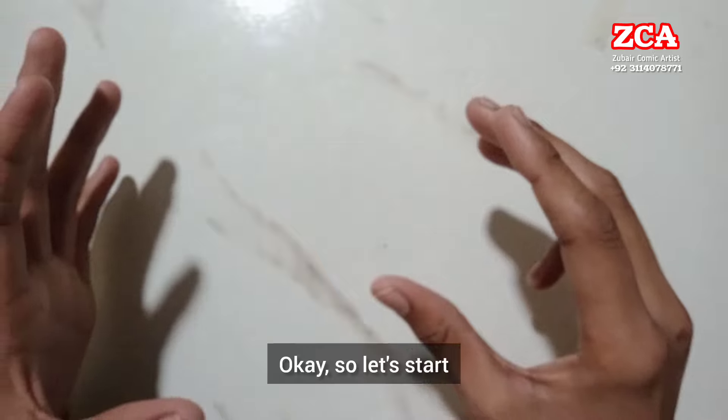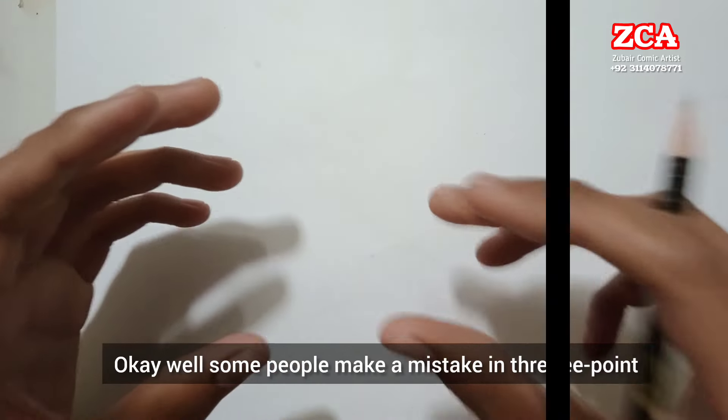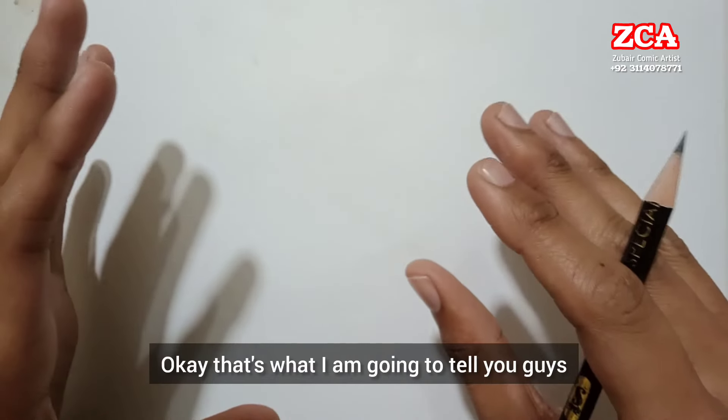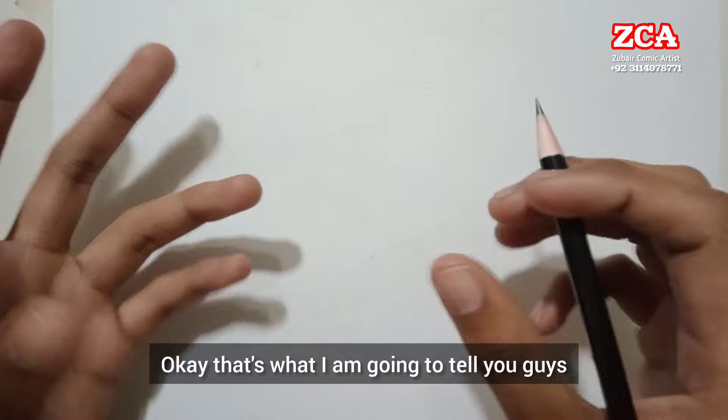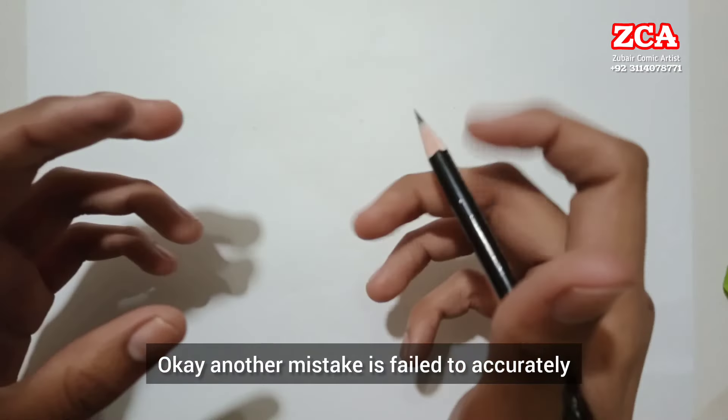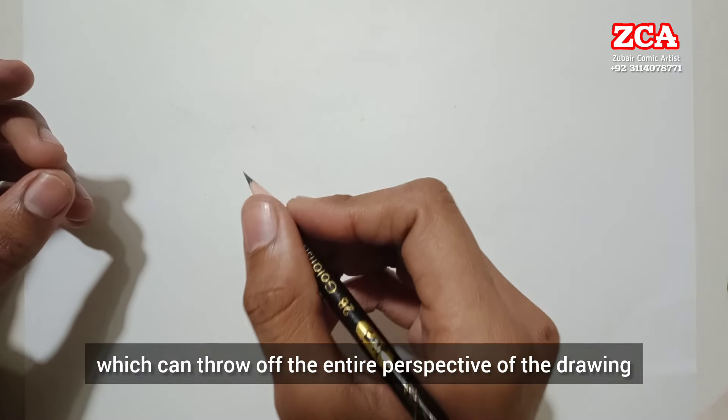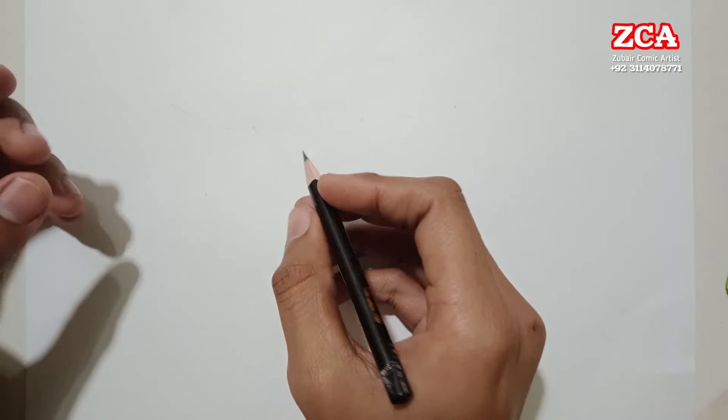I'm going to do a practical demonstration now. Some people make mistakes in three-point perspective, and that's what I'm going to tell you about. Another common mistake is failing to accurately place the vanishing points, which can throw off the entire perspective of the drawing.